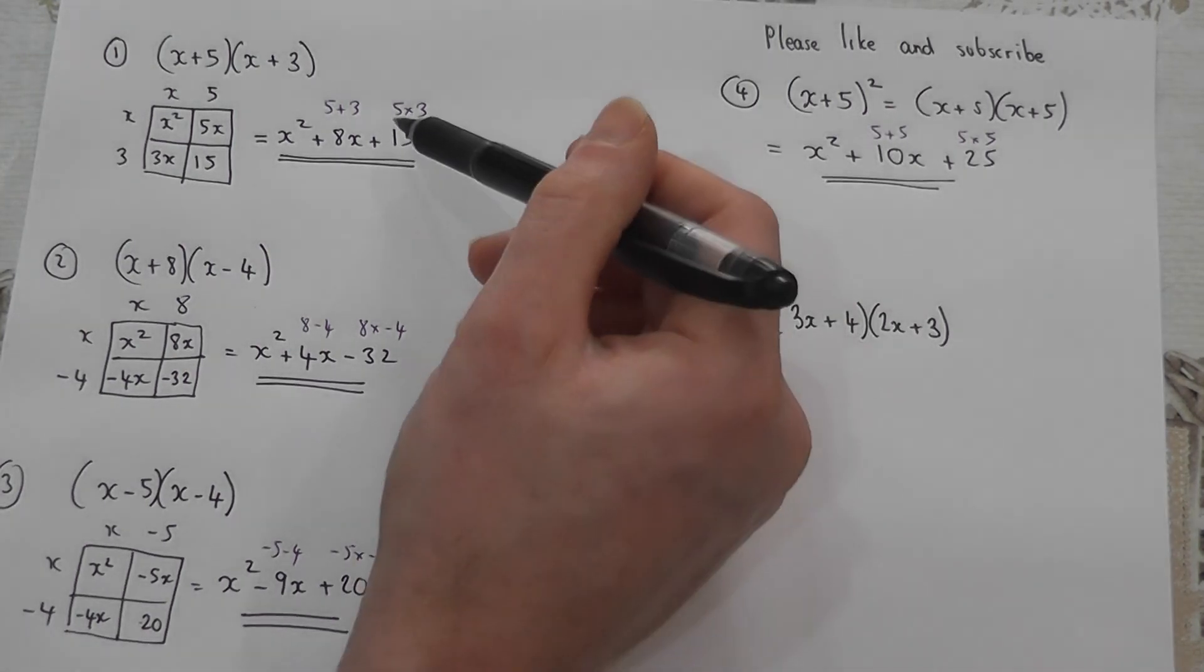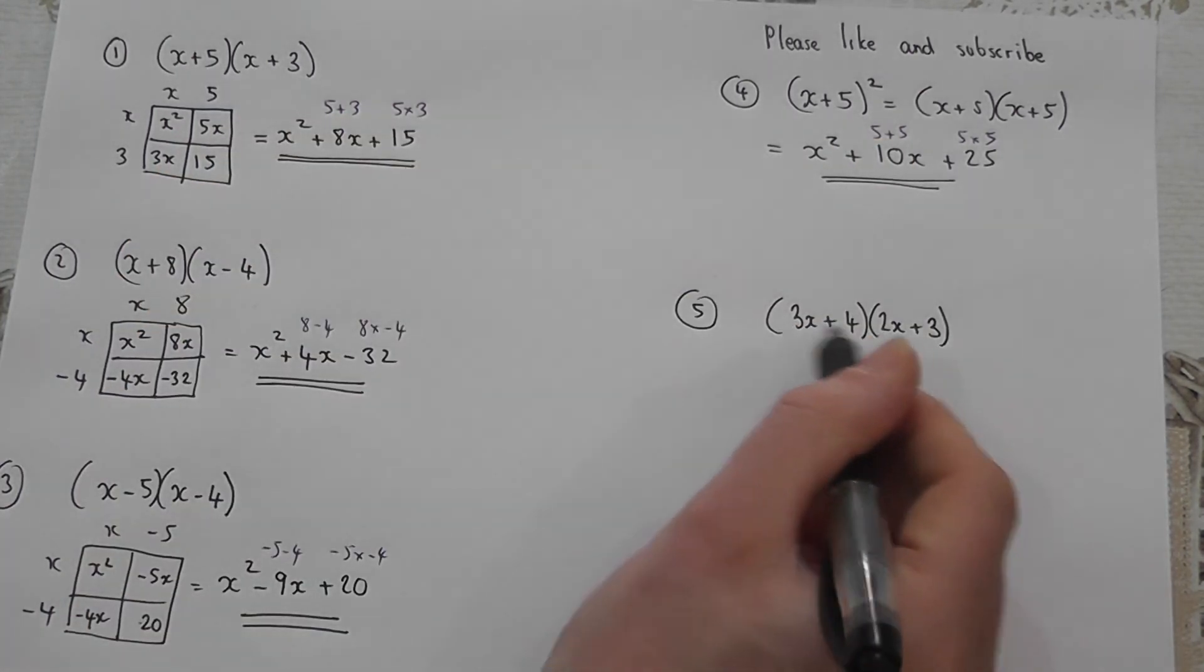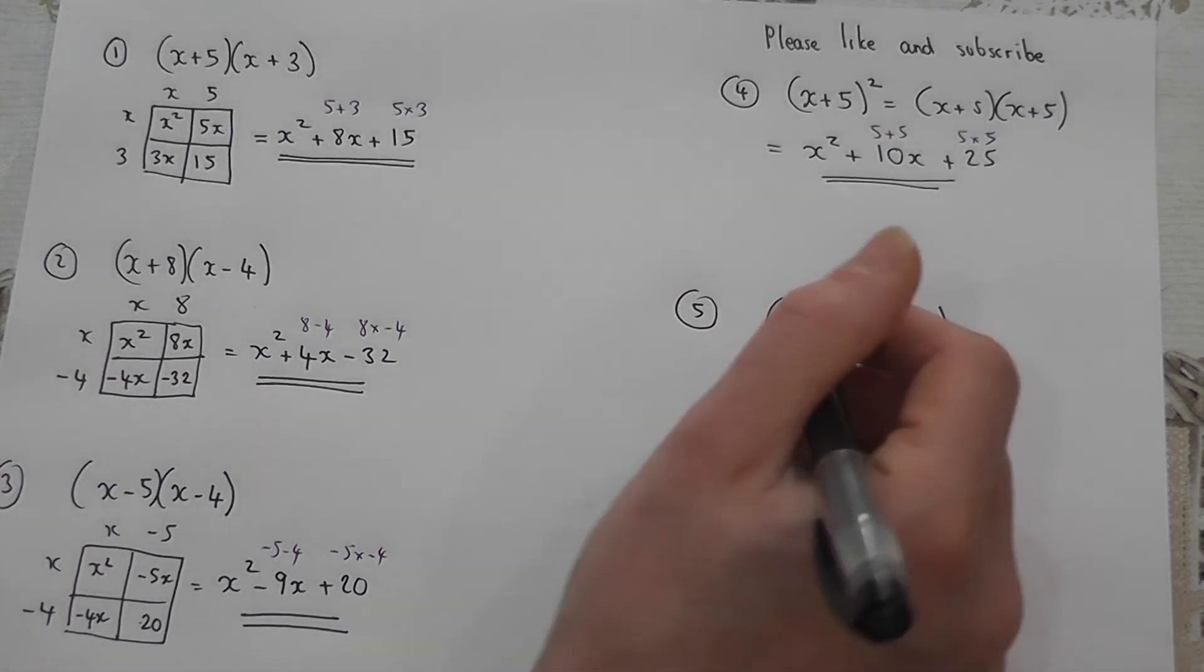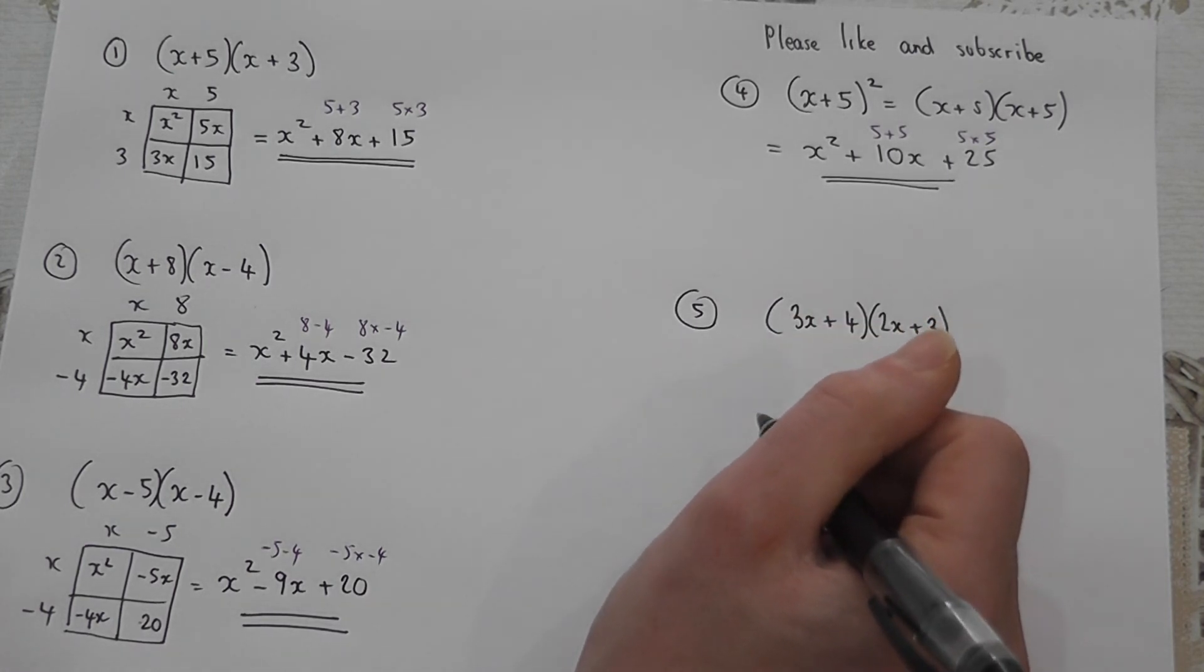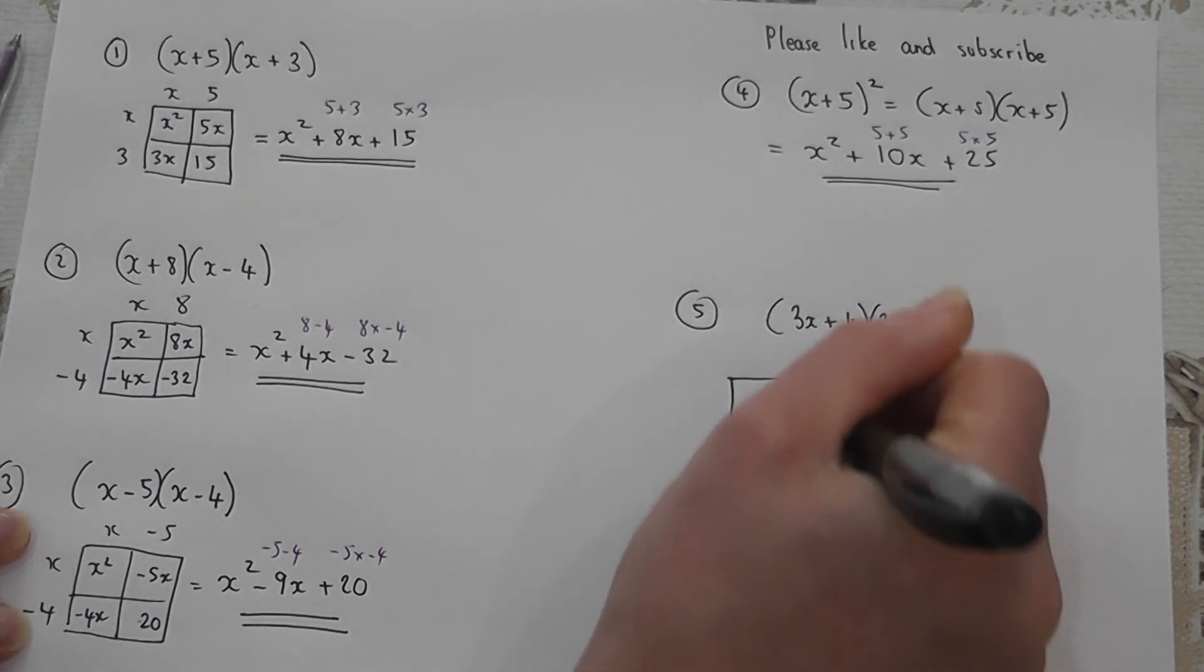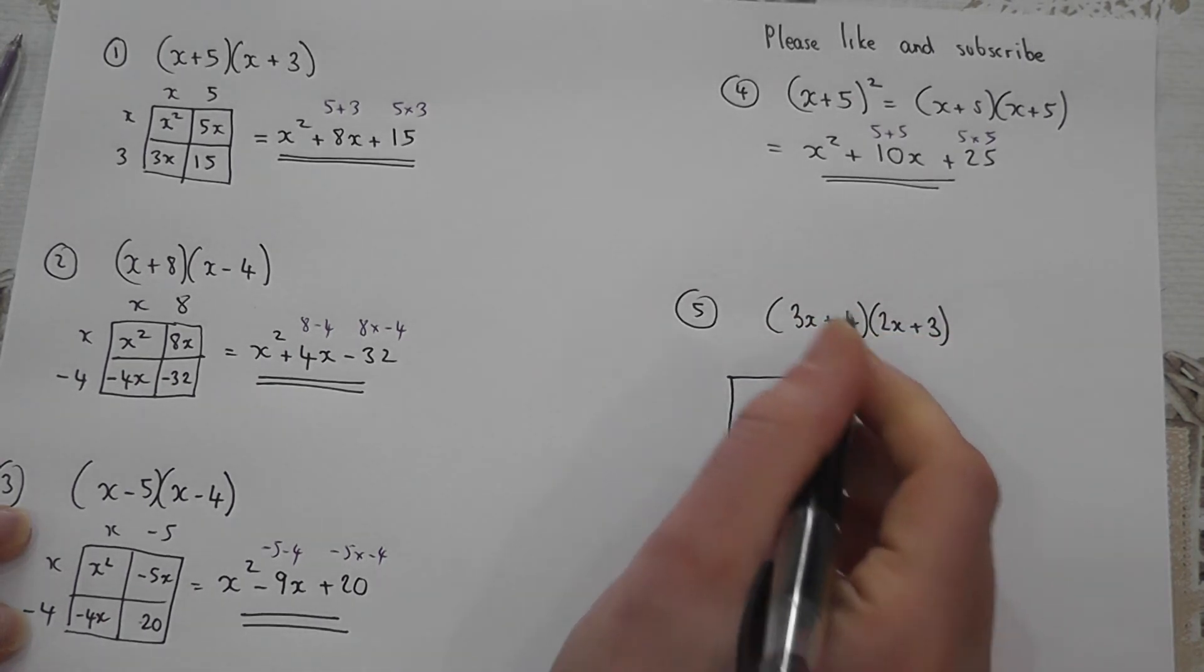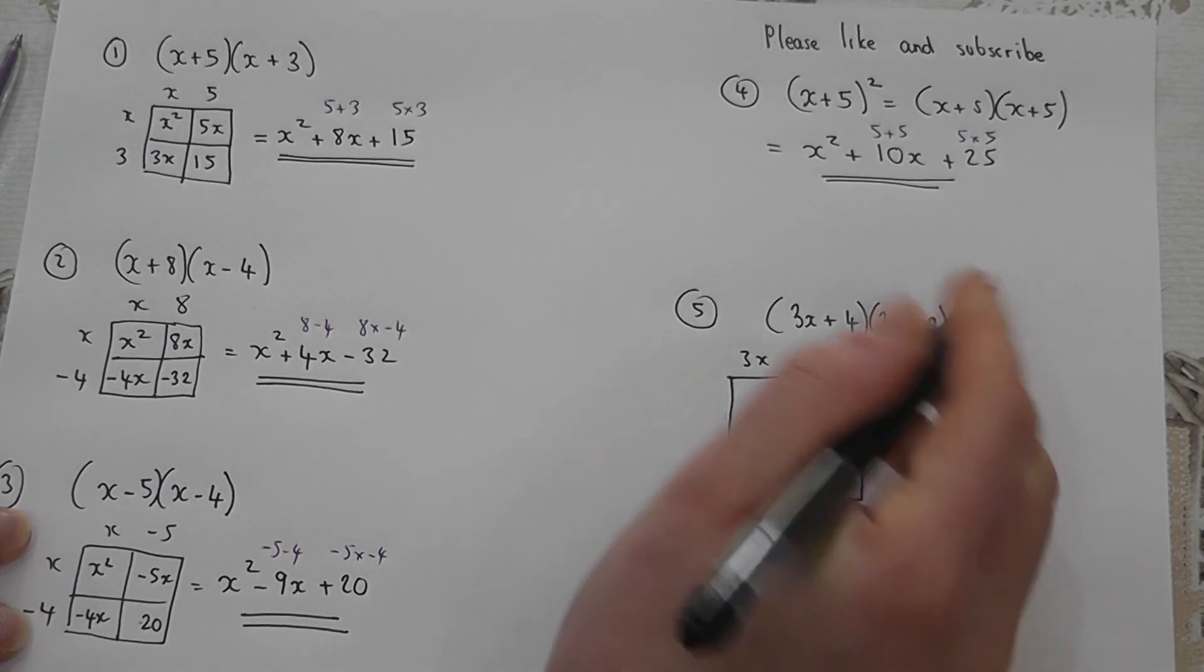Now for all the little tricks we did here they only work when it's x and x. Now when you've got numbers here like 3x and 2x you've got to be more careful. And my advice is in the early stages with this is to actually go through the method carefully. You can learn some shortcuts. But if I do the grid here which again is just a way to represent FOIL in a nice neat way. The first bracket is 3x and 4. The second bracket is 2x and a 3.